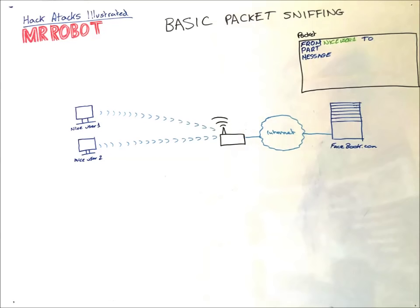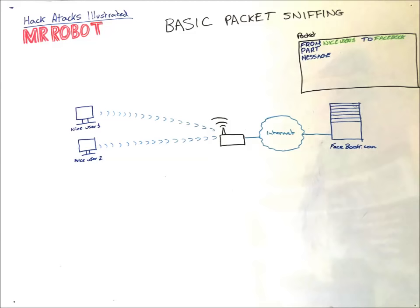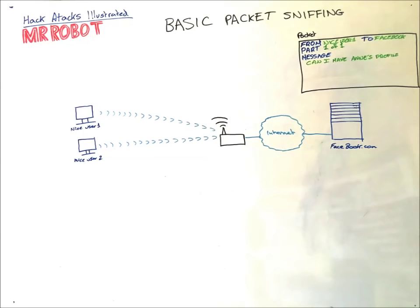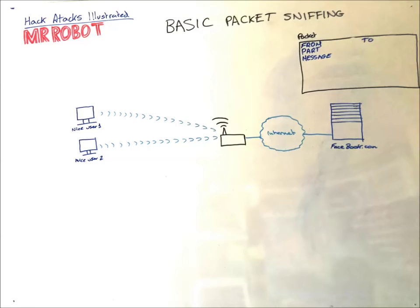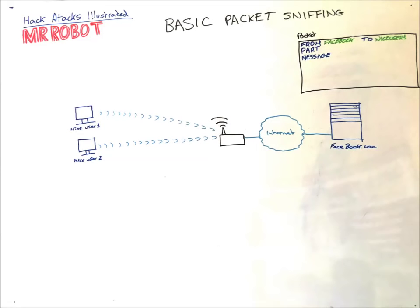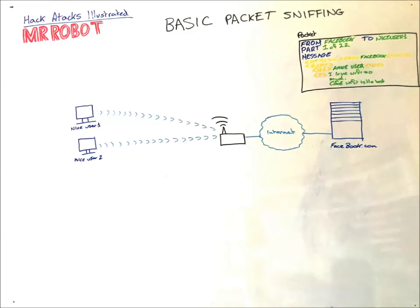So in our example, this packet is coming from niceuser1 to facebook.com, and it's part 1 of 1. And the message contains, can I have Ann's profile? Facebook then replies with a packet from Facebook to niceuser1. And this one is chopped up, so it's part 1 of 22. And the message contains the first part of Ann's profile.